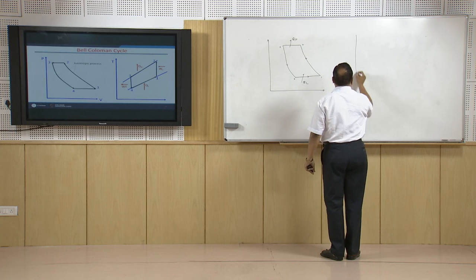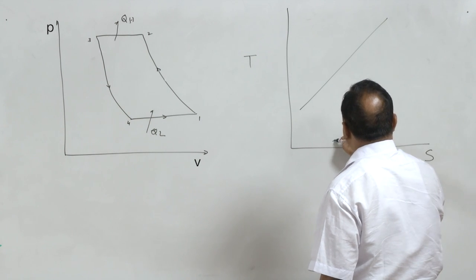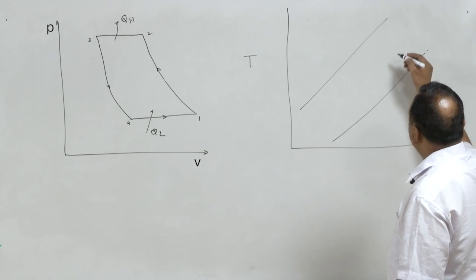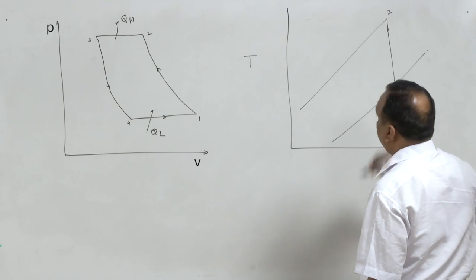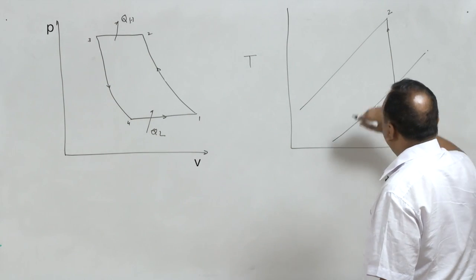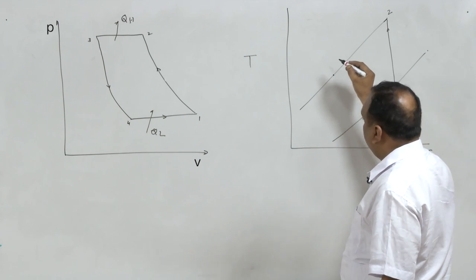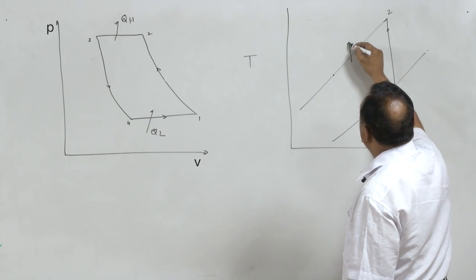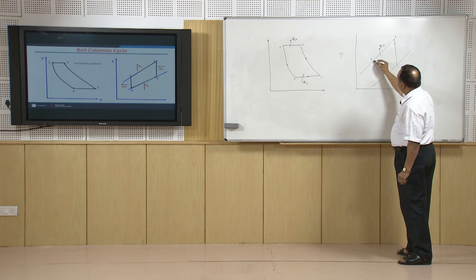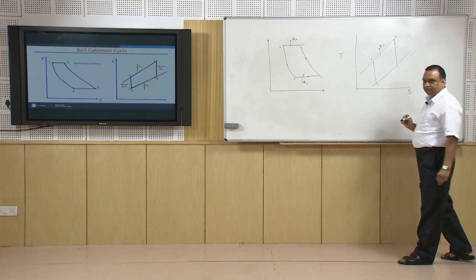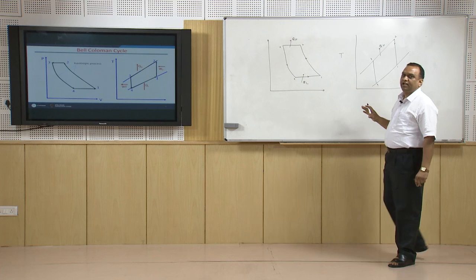Showing the same cycle on the temperature-entropy diagram, there are two constant pressure processes. Process 1 to 2 is isentropic compression where pressure increases, then heat is extracted from the high-pressure air, making it high-pressure low-temperature air — we attain state 3. At state 3, expansion takes place and state 4 is attained. I will give numerical values for these states so you have a clear idea of the cycle.